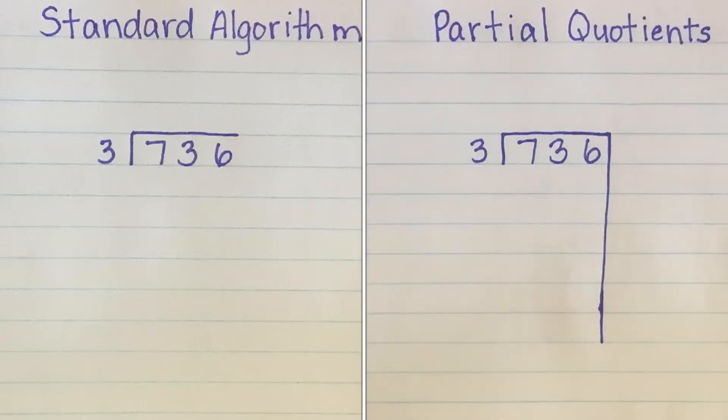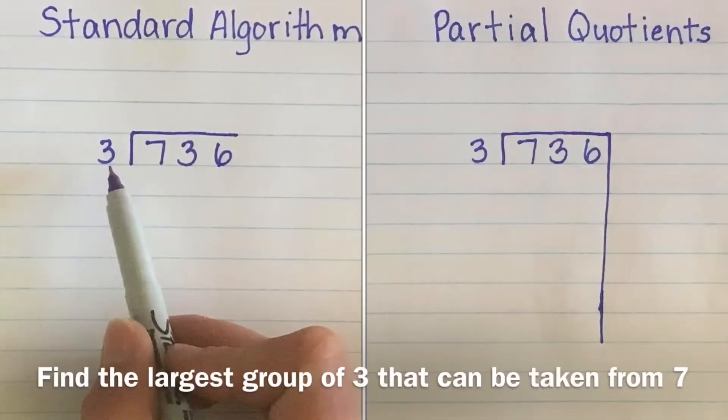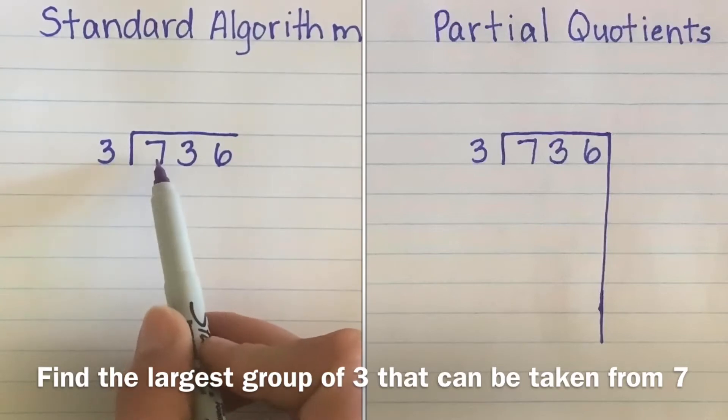This video compares the standard algorithm method to the partial quotients method of division. In our standard algorithm method, we want to find the largest group of 3 that can be taken from 7, our first digit in the dividend.